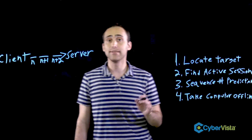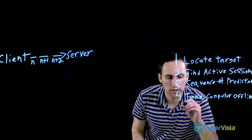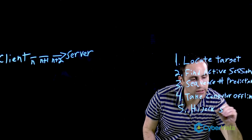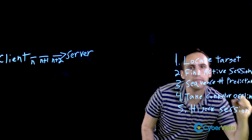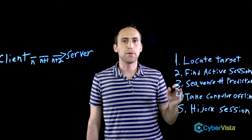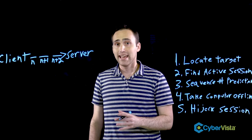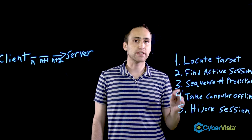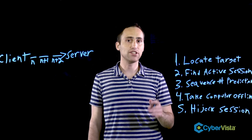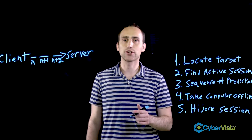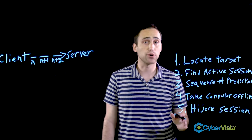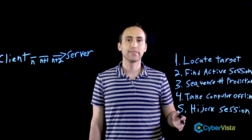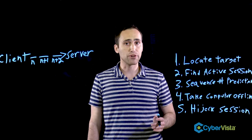Fifth and finally, the hacker hijacks the session. The attacker will spoof their client IP address to avoid detection and include a sequence number that was predicted earlier. If the server accepts this information, the hacker has successfully hijacked the session. The attacker should now have access to the network with the same permissions as the compromised user. So there you have it — that is sequence number prediction.